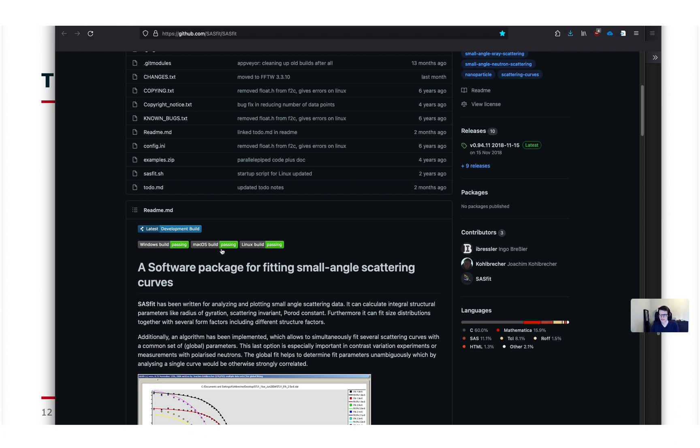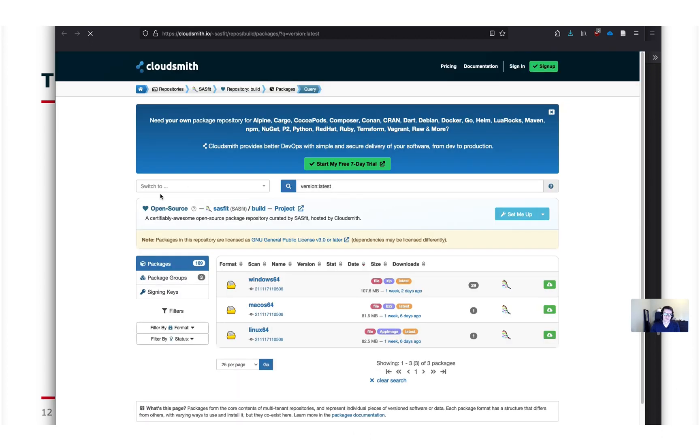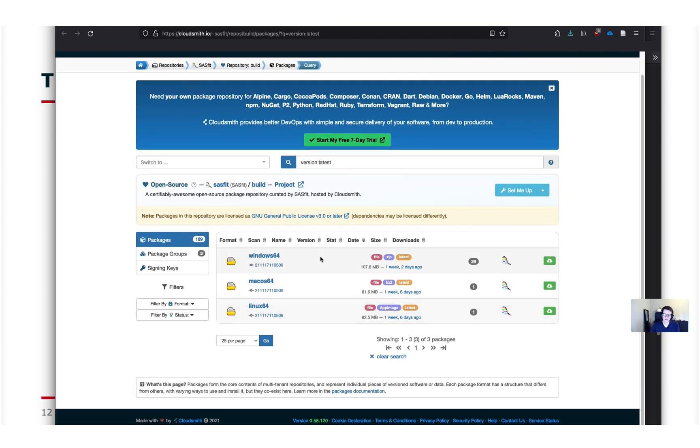We are working on the newer release along with a new publication. In the meantime there are development versions I would refer you to. You can get them here. The upper blue button is the cloudsmith button where you can get the latest version of the build. So there are three versions. One for Windows, for macOS and for Linux.